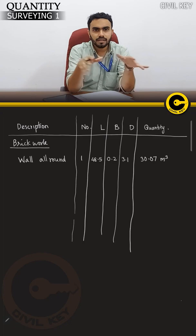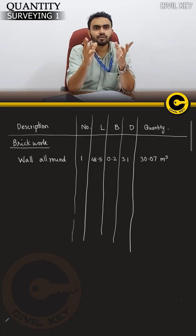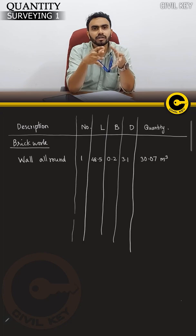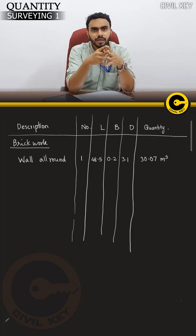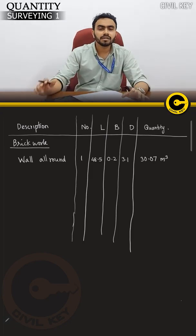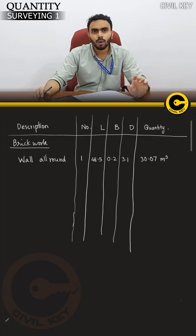Length is 48.5, breadth is 0.2, and height of this wall is 3.1 meters. Multiplying these gives 30.07 m³. Now we will consider doors and windows and deduct their quantities to get the actual quantity of wall.